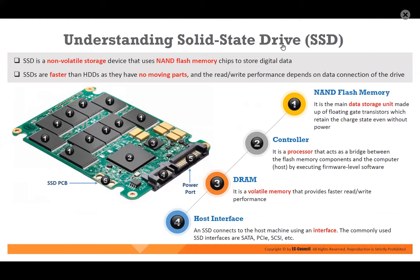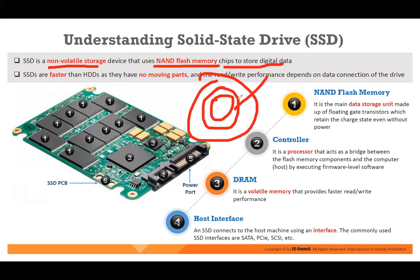SSD — solid state drive. Other than HDD, it is a non-volatile storage that uses NAND flash memory chips to store digital data. It is not like cylinders — an HDD has multiple cylinders with a head that must move, which limits performance. But an SSD does not have a cylinder. It is flash memory. The main data storage unit is NAND memory. It also has a processor that acts as a bridge between the flash memory and the computer host by executing firmware-level software — this is called the controller.